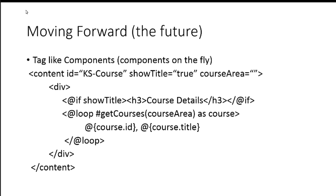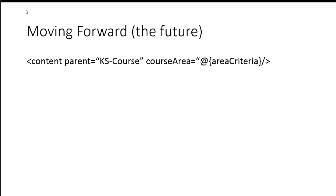You define your content tag and define your attributes just like you normally would. I have two attributes here: show title and course area. Those then become properties of the component — you just created a component that has two properties. Or if you think of it in tags, you just created a tag that has two parameters. So you can read the values for those, do an if statement, do a loop, use a Spring expression language. And then that can get invoked in other places in your XML by referencing that parent, passing different values for those attributes.